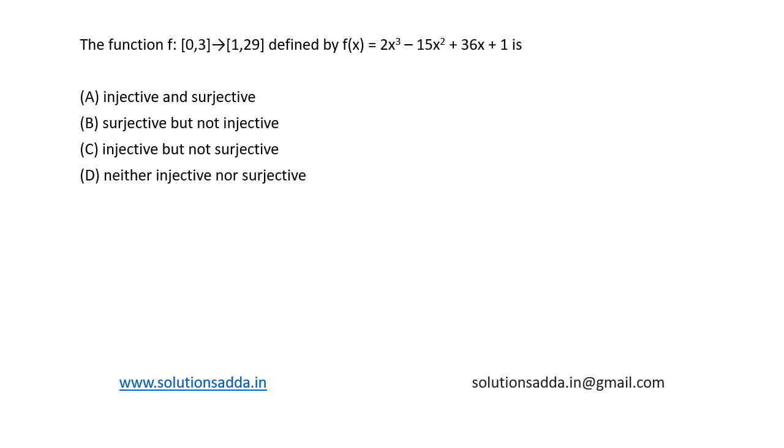This is a question from engineering mathematics. The function f in the domain [0,3] defined to the range [1,29] for the function f(x) = 2x³ - 15x² + 36x + 1 is given, and four options are provided.